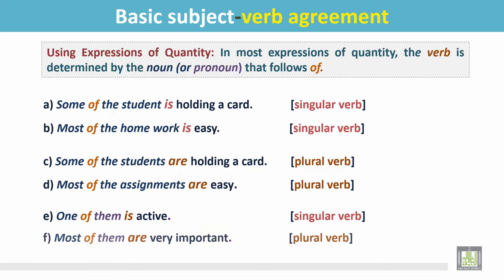Number F: 'Most of them are very important.' The sentence begins with 'most,' which expresses plural quantity, so the verb is plural: 'are.'